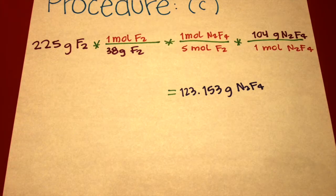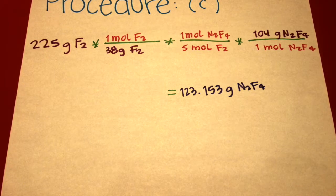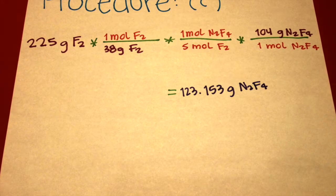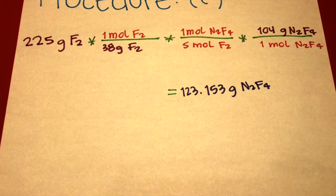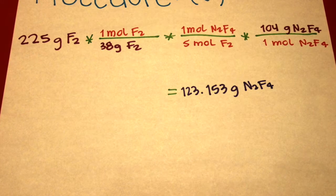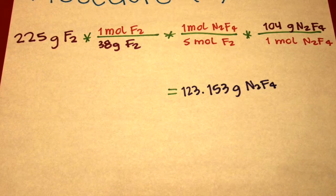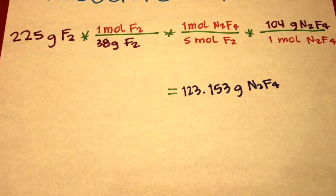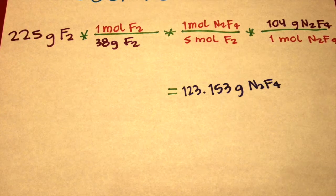This is the procedure for question C. First, I copied the 225 grams of fluoride given in the problem. Then I multiplied that times 1 mole of fluoride over 38 grams of fluoride, because 38 grams is the mass of a single mole of fluoride. Then I multiplied that times 1 mole of nitrogen tetrafluoride over 5 moles of fluoride. Then I multiplied that times 104 grams of nitrogen tetrafluoride over 1 mole of nitrogen tetrafluoride, because 104 grams is the mass of a single mole. The answer was 123.153 grams of dinitrogen tetrafluoride.